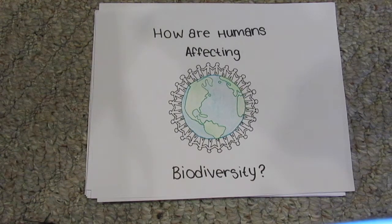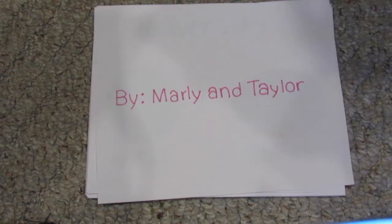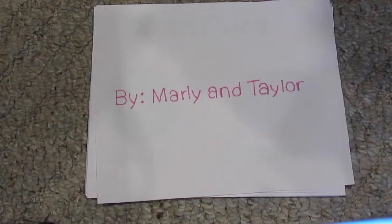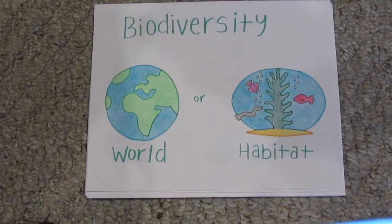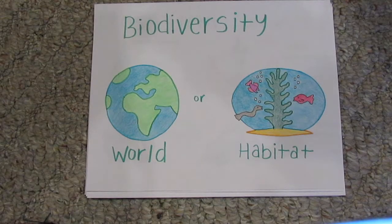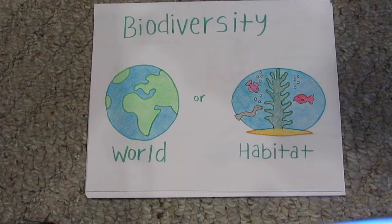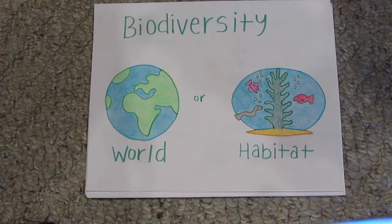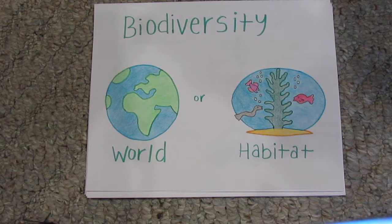How are humans impacting and affecting biodiversity? Biodiversity is the variety of life in the world or in a particular habitat or ecosystem. Biodiversity boosts ecosystems where all species have an important role to play. A healthy biodiversity provides a number of natural services for everyone, including ecosystem services, biological resources, and social benefits.